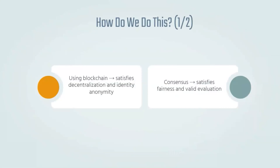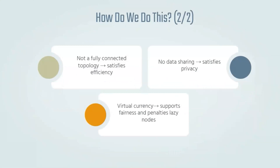So how do we do this? We depend on blockchain, which satisfies the decentralization and identity anonymity in the system. Our consensus algorithm ensures fairness and the validity of the model and its updates. Our network topology uses a fully connected one, which guarantees the efficiency of the system. No data is being shared, so privacy is maintained.